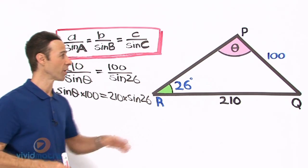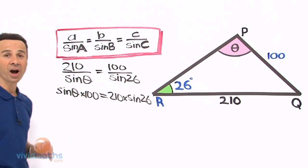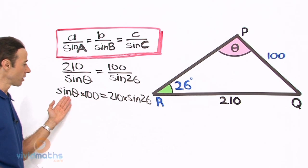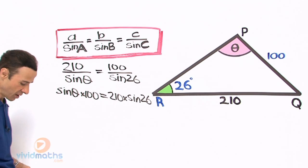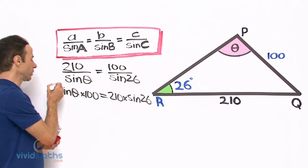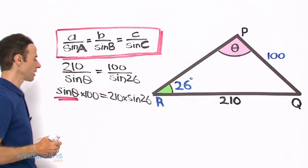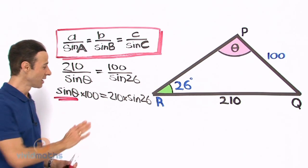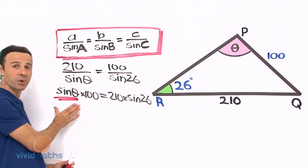We are after the angle theta right over here so that means we want to isolate and make singular this theta right there. So let me just underline that because this is what we are going for right there. So what do we do? We divide both sides by 100 to get rid of that 100 to leave this by itself.